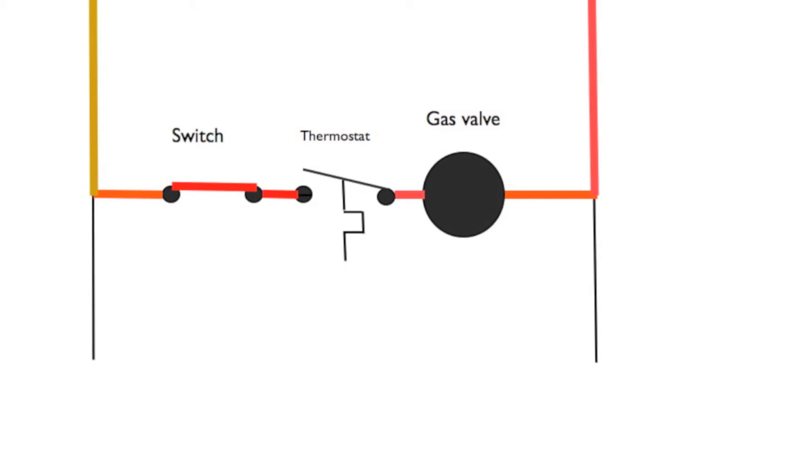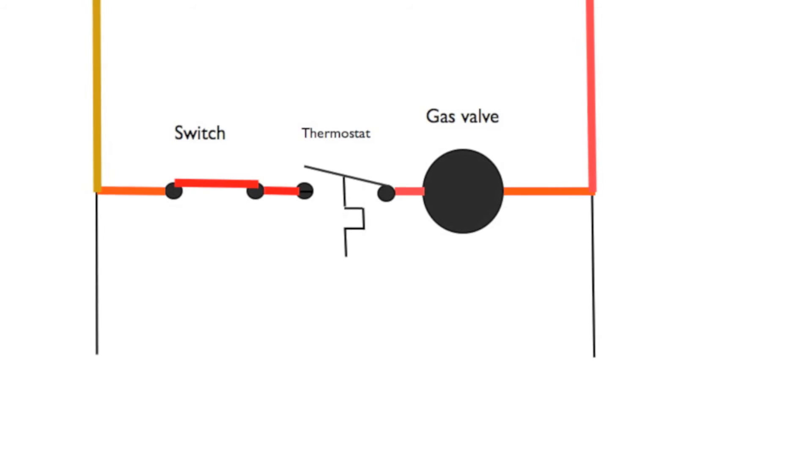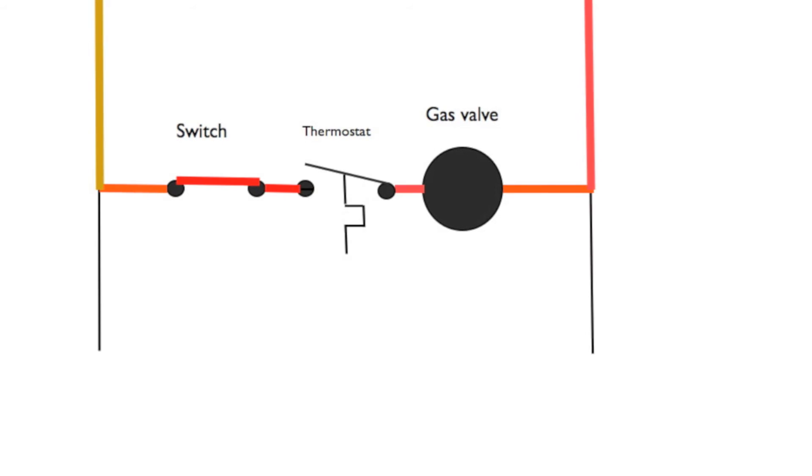Now, the gas valve has still not been energized because the thermostat isn't closed. What's going to have to happen is the temperature in the structure is going to have to drop. When the temperature drops, then the thermostat will pass power to the gas valve.